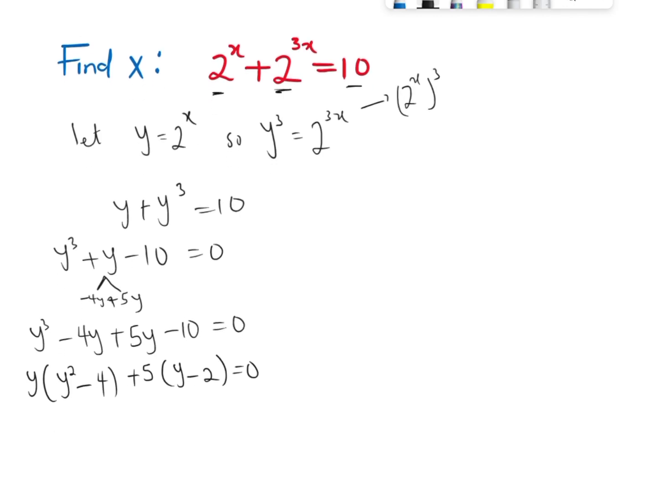So, the next line after this, looking at y squared minus 4, we can see that we can use the difference of 2 squared approach to this, which means we can have y squared minus 4, which is y squared minus 2 raised to the power 2. So here, we have y plus 2, y minus 2, plus 5, y minus 2 equals 0.